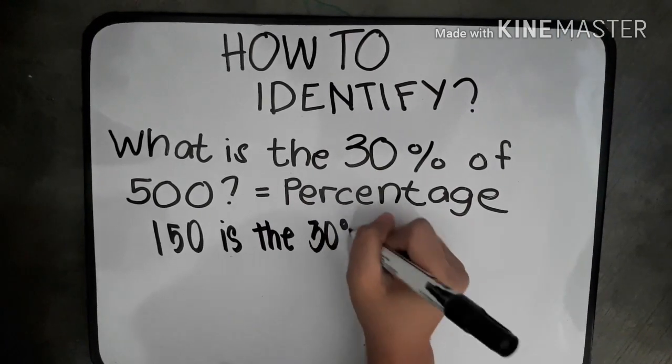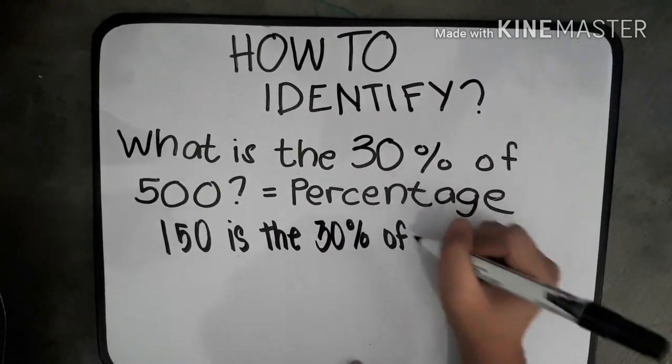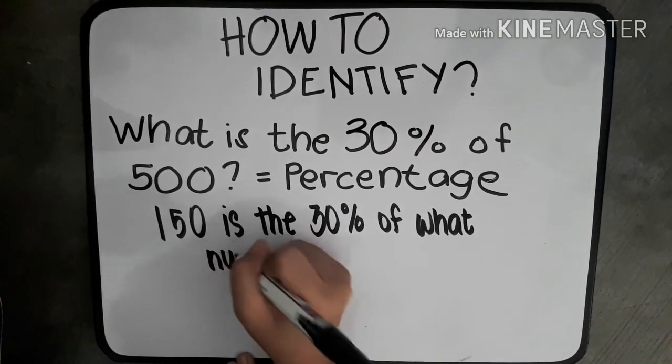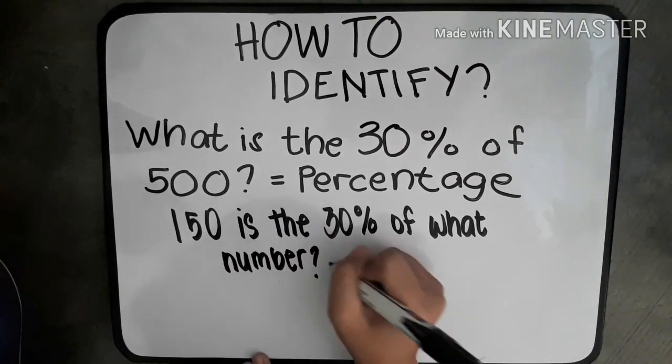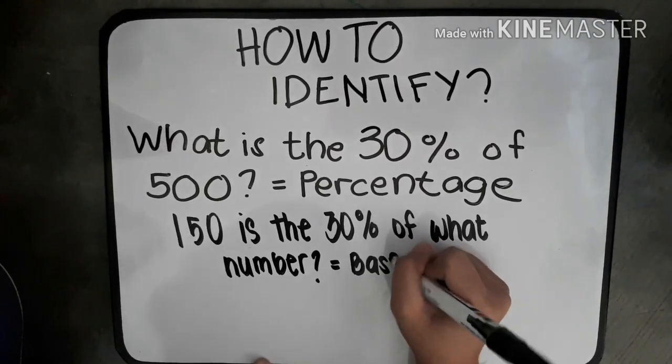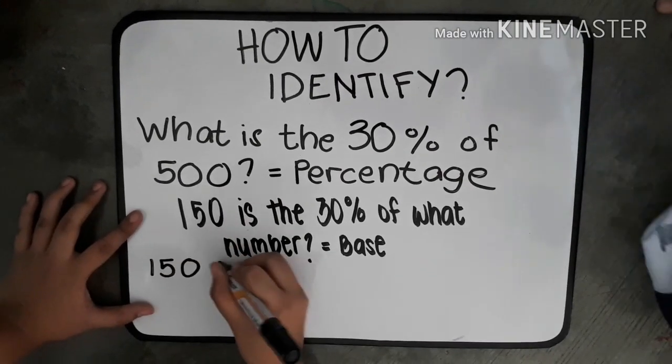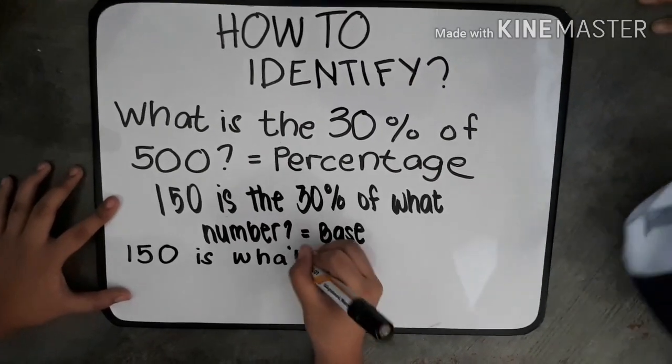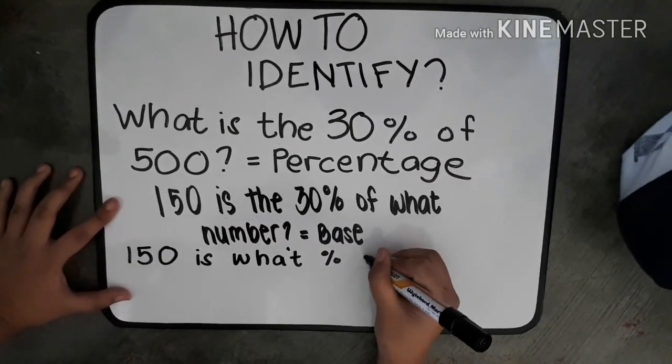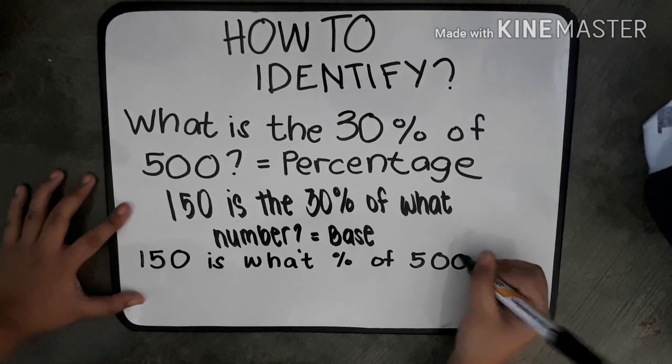If the question is 150 is 30% of what number, means that you are missing the base. If the question is 150 is what percent of 500, means that you are missing the rate.